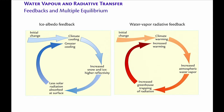Ice albedo feedback is relatively simple to understand: some initial change gives you cooling, which gives increased snow and ice, high reflectivity, less solar radiation, more cooling — round and round. Water vapor radiative feedback is of a similar ilk: suppose you have a warming perturbation, you get increased atmospheric water vapor, more greenhouse effect, more warming. These arrows can go the other way — ice albedo feedback can be a warming feedback, and the greenhouse effect can be a cooling feedback.